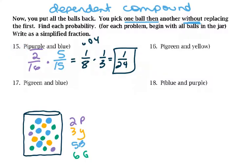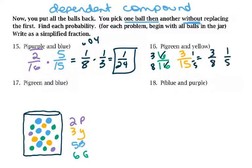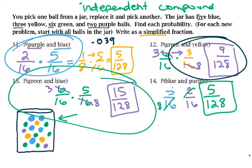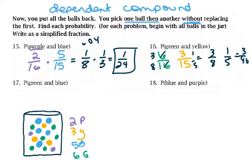Comparing these as decimals, you have a better chance of getting purple then blue if you don't put the first one back. For problem 16, probability of green then yellow without replacement: P(green) is 6/16, then P(yellow) is 3/15. Reducing: 6/16 becomes 3/8, and 3/15 becomes 1/5. So 3/8 times 1/5 equals 3/40. Again you can compare that to when you did replace it — you have a better chance here without replacing it. That's not always the case, but in this situation it is.